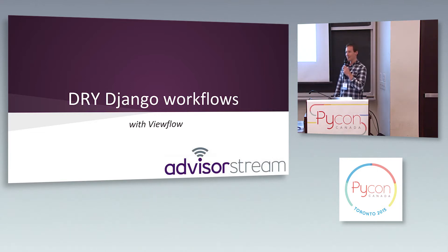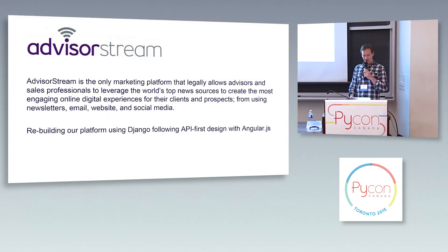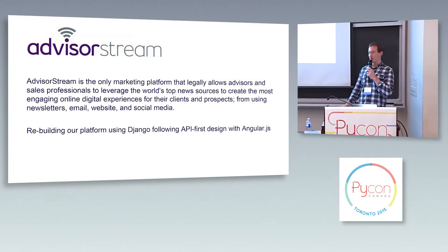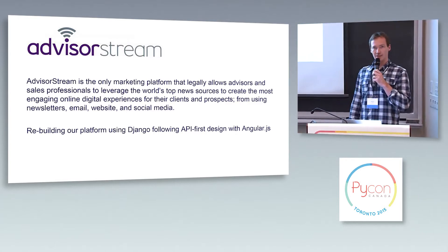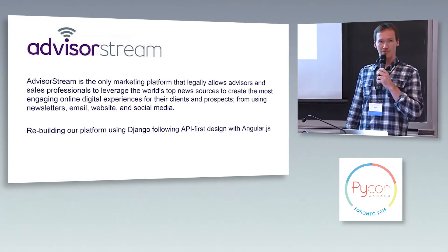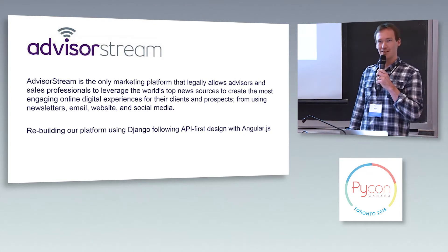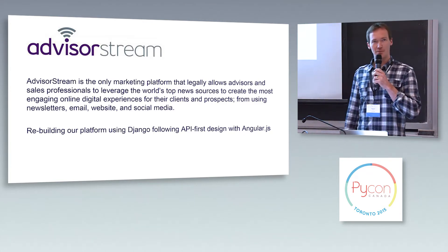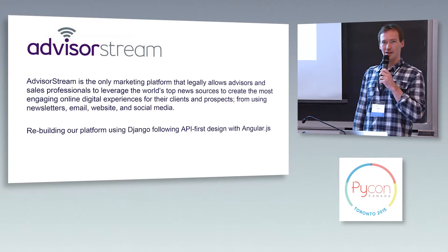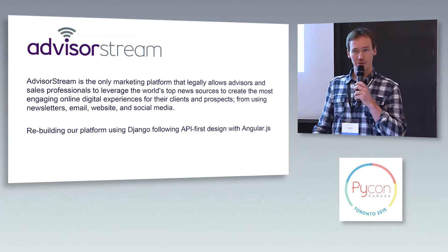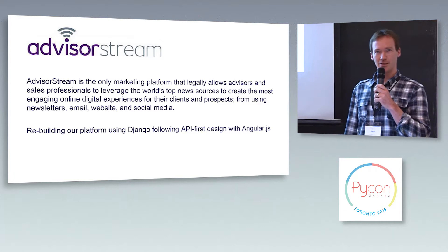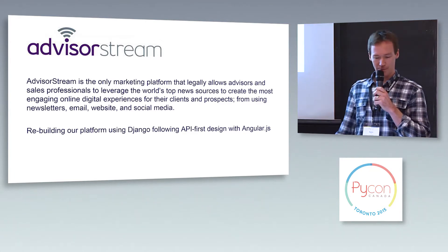This talk is one of a series of Django talks focusing on workflows. First, just an intro about our company — it's AdvisorStream. We license third-party content, mostly from very recognized publishers like The Globe and Mail and New York Times. We put that together in a library and make it available to investment advisors to use in their client communications, such as newsletters, emails, and social media posts.